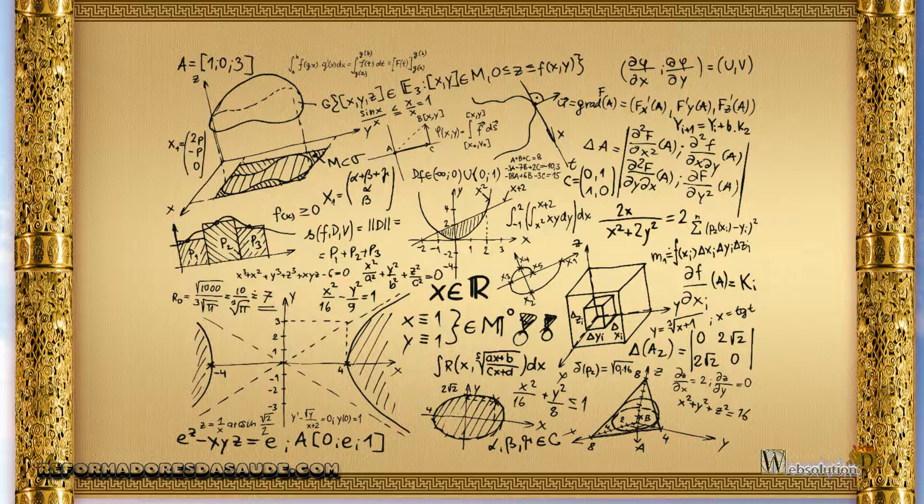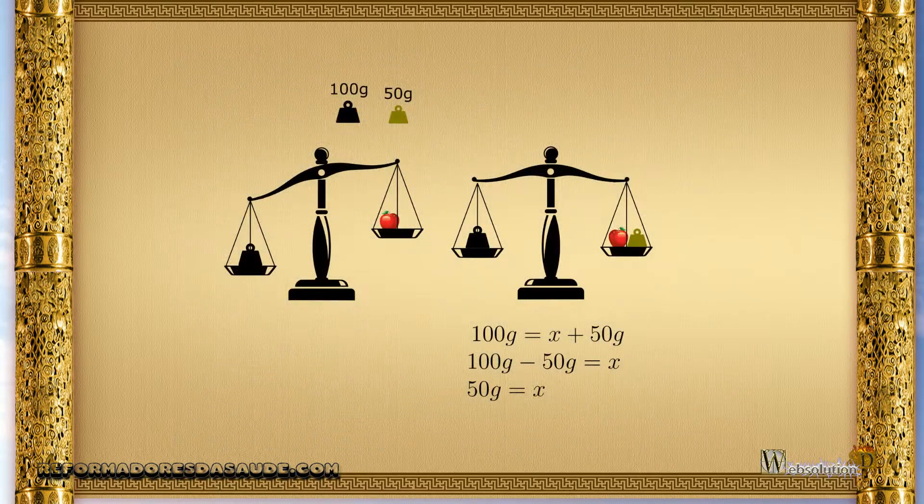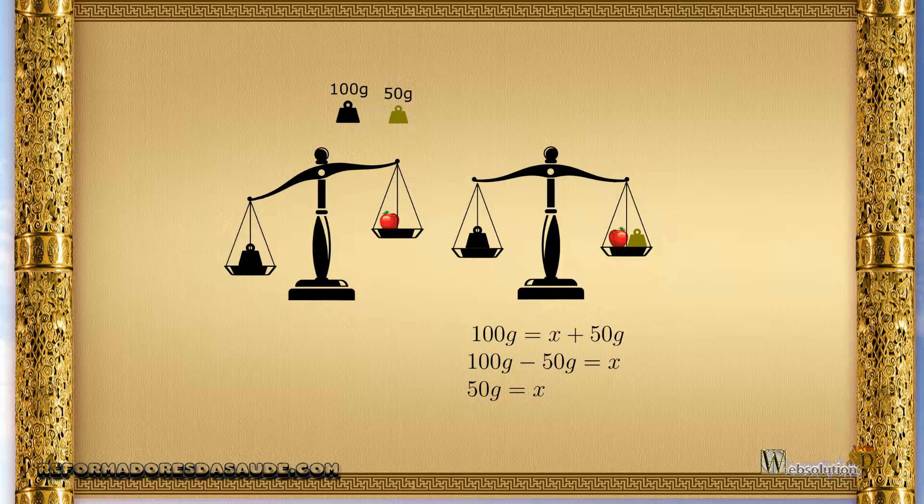Now suppose I have only one fruit and put it on the scale arm. Then I put a weight of 100 grams and the scale goes down to the position of the weight. Then I put a weight of 50 grams next to the fruit and now the balance is balanced.